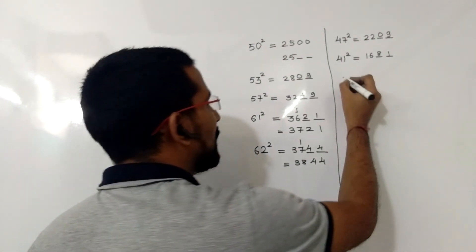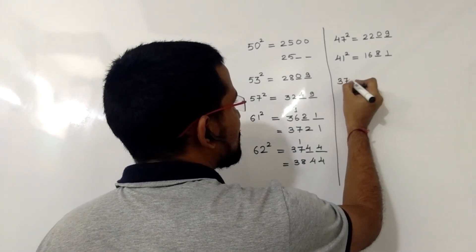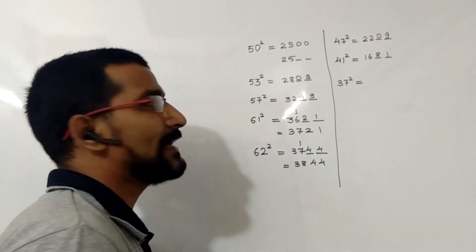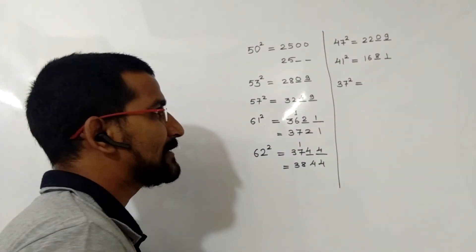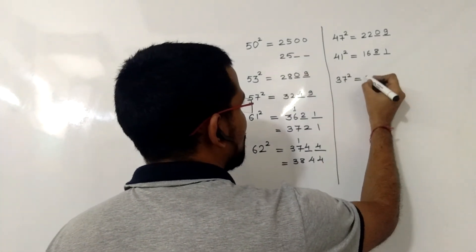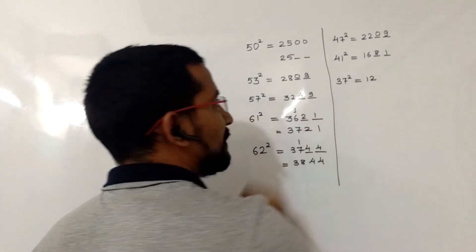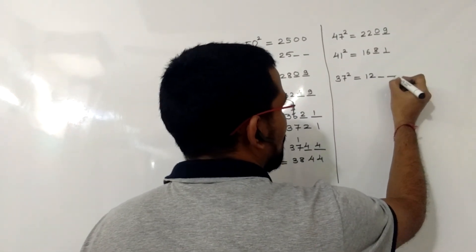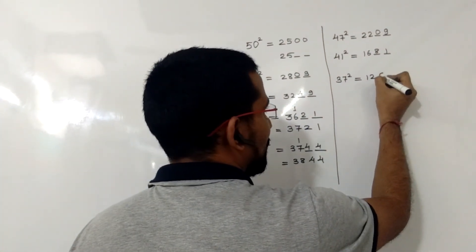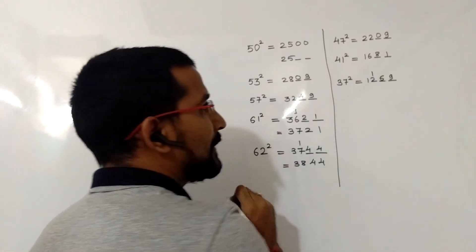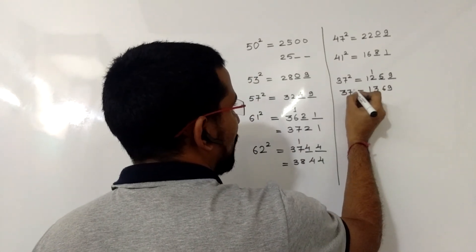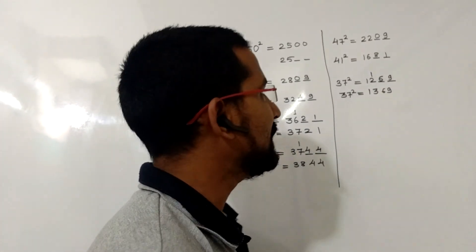One more example: 37 squared. 37 is 13 less than 50, so we subtract 13 from 25, giving 12. The square of 13 is 169. We write 69 in the last two spaces and carry the 1 forward. So the square of 37 is 1369.